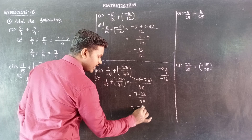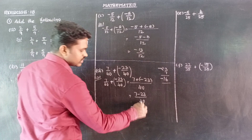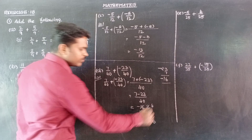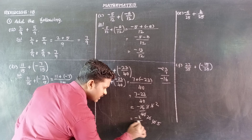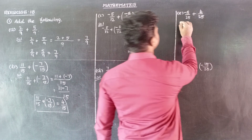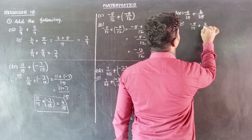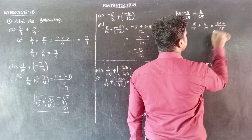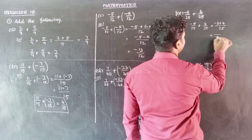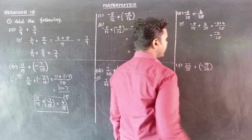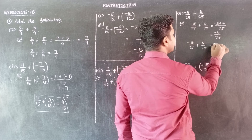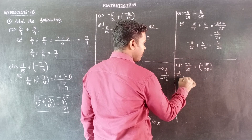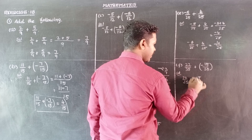So minus 16 by 40 — simplify: 8 2s are 16, 20 2s are 40, so the answer is minus 2 by 5. Next subdivision E: minus 8 by 25 plus 4 by 25. Denominator is 25, same. So numerator: minus 8 plus 4. Different sign, subtraction — minus 4 by 25. So minus 8 by 25 plus 4 by 25 is equal to minus 4 by 25.